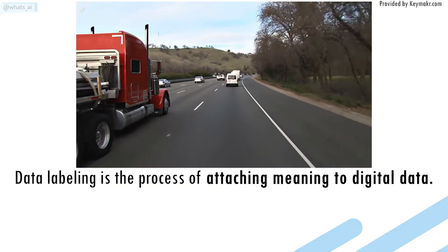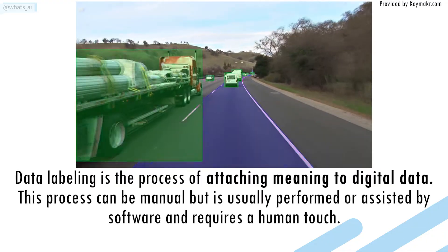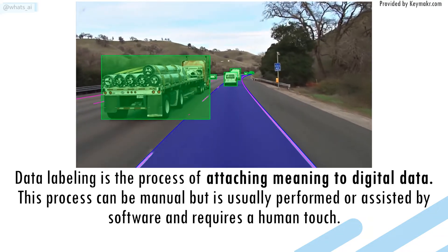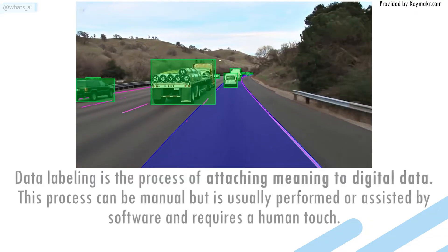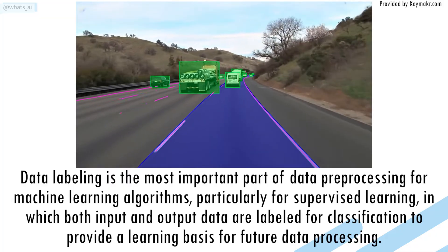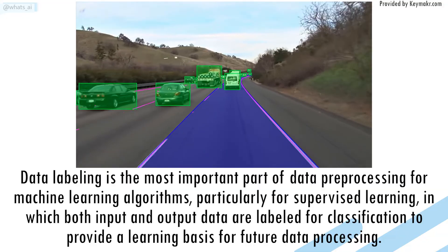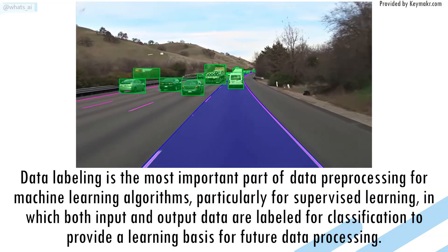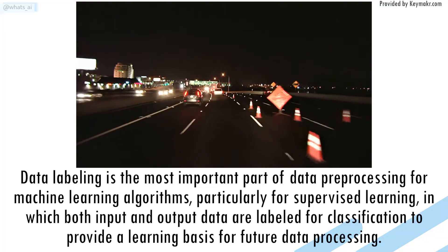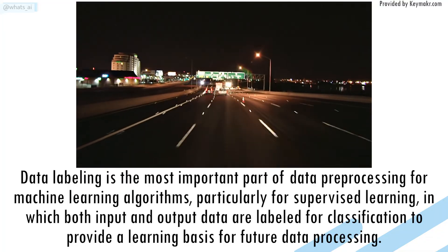Data labeling is the process of attaching meaning to digital data. This process can be manual, but is usually performed or assisted by software and requires a human touch. Data labeling is the most important part of data processing for machine learning algorithms, particularly for supervised learning, in which both input and output data are labeled for classification to provide a learning basis for future data processing.